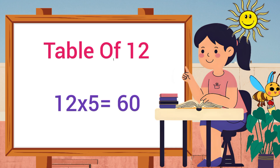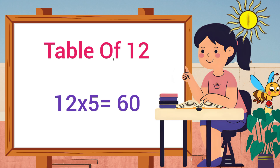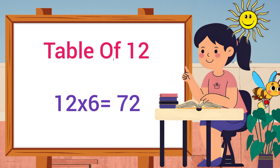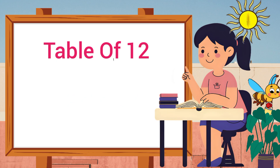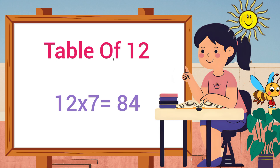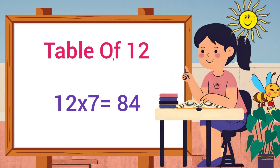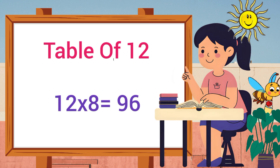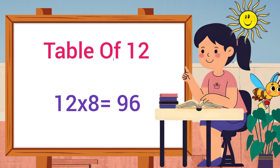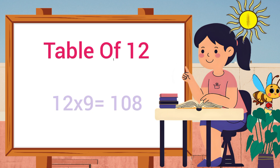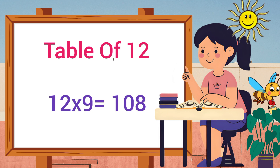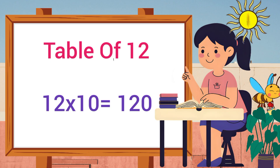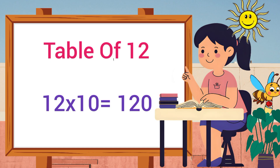Twelve fives are sixty, twelve sixes are seventy-two, twelve sevens are eighty-four, twelve eights are ninety-six, twelve nines are hundred-and-eight, twelve tens are one-twenty.